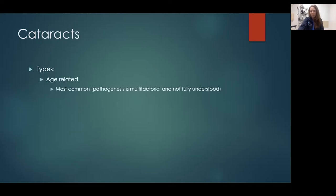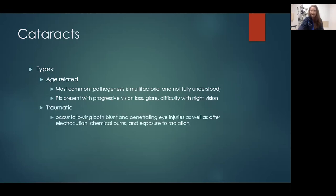Age-related cataract is the most common type — pathogenesis is multifactorial and not fully understood. Patients will have progressive vision loss. Something to ask is whether they have glare — many will say driving at night the bright lights cause extreme glare and they can't see. That's very common with cataracts. Traumatic cataracts can follow any blunt injury or penetrating trauma — patients who've been in fistfights or had construction accidents. In a matter of a couple of days they can develop a white, really dense cataract.